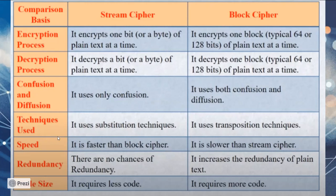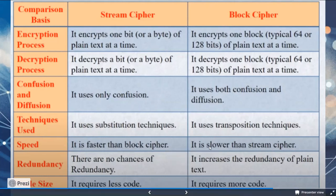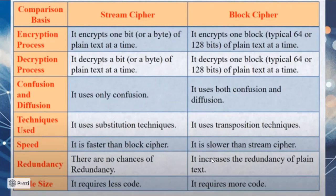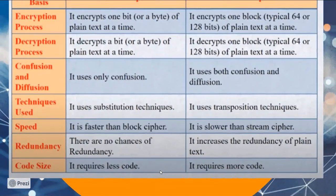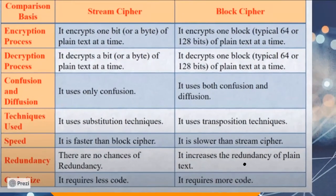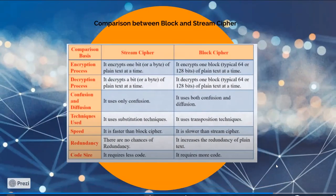As far as speed is concerned, stream cipher processes bit by bit, so it is obviously faster. Block cipher, because you have to convert block by block, is obviously slower compared to stream cipher. As for redundancy, there are no chances of redundancy in stream cipher since we only apply confusion. In block cipher, redundancy increases because you add diffusion as well. As for code size, when you implement stream cipher, you don't need heavy coding, but when implementing block cipher, you have to use heavier code.